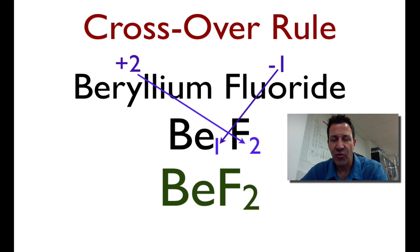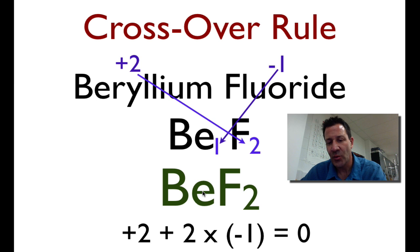Write down the charges, cross them over, and write down the final formula. Now, let's just confirm that that actually works. We have 1 beryllium and 2 fluorines. The overall charge on this ionic unit must be 0. So let's check. 1 Be, that's a plus 2, and 2 fluorines, each of which is a minus 1. If we add all the charges up, we get plus 2 plus 2 minus 1s, and that equals 0. That is the way that that works.